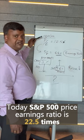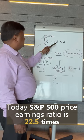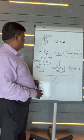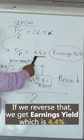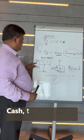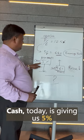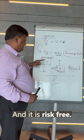Today S&P 500 price earnings ratio is 22.5 times. If we reverse that, we get earnings yield which is 4.4%. Cash today is giving us 5% and it is risk free.